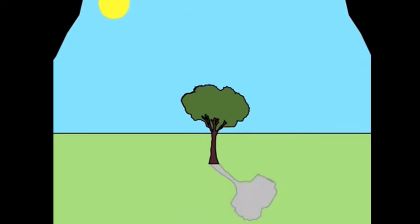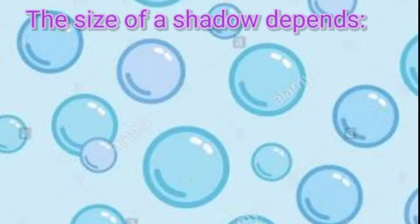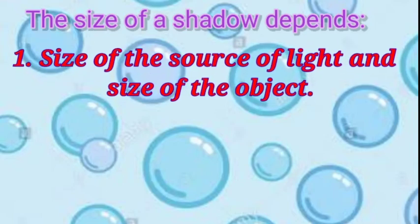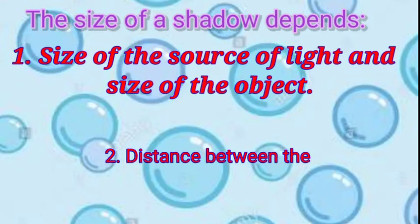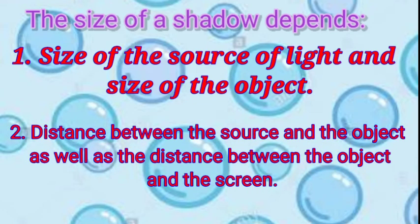A shadow of a tree is shortest at noon and longer in the morning and evening. That means the size of a shadow of an object varies. It depends on first, the size of the source of light and size of the object; second, the distance between the source and the object as well as the distance between the object and the screen.